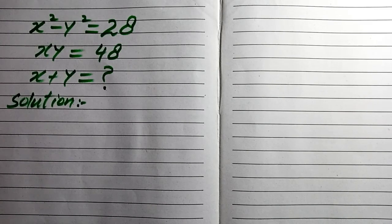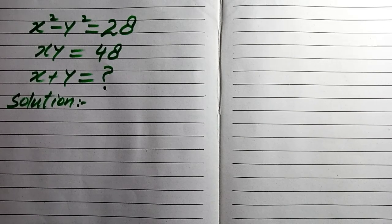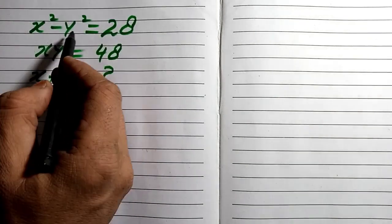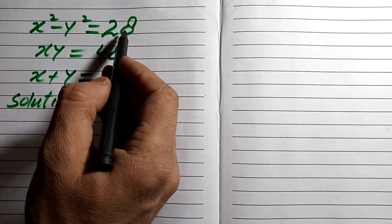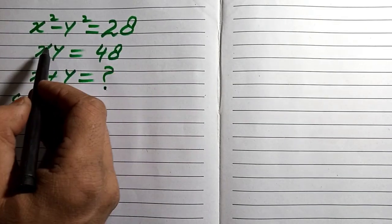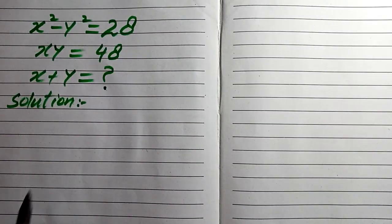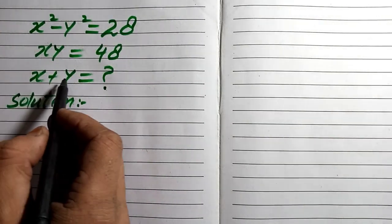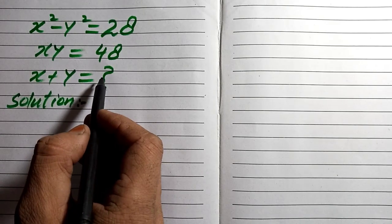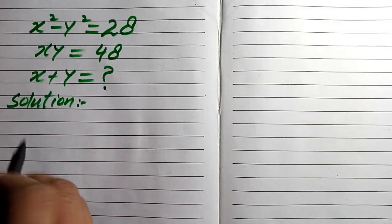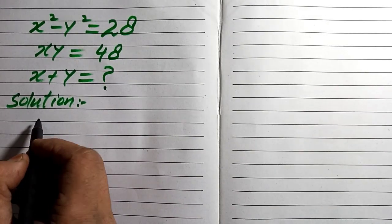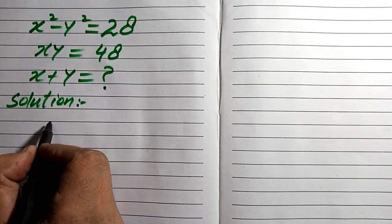Hello everyone, welcome to another video. In this math olympiad problem, we are finding the value of x plus y. The question gives us x squared minus y squared equals 28, and xy equals 48. We need to find x plus y, so we will use a formula.